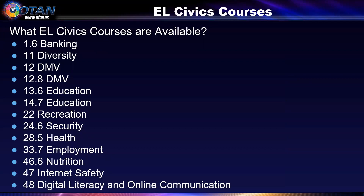These are all the COAPs currently offered: 1.6 Banking, 11 Diversity, 12 DMV, 12.8 DMV, 13.6 Education, 14.7 Education, 22 Recreation, 24.6 Security, 28.5 Health, 33.7 Employment, 46.6 Nutrition, 47 Internet Safety, and 48 Digital Literacy and Online Communication. There are 14 courses in total, with hopes that more can be added.